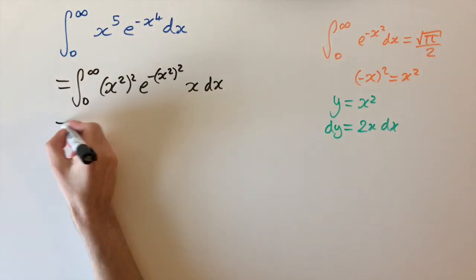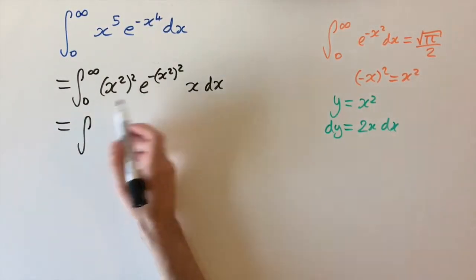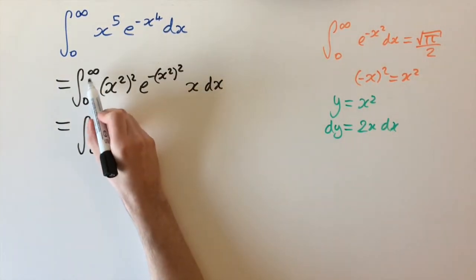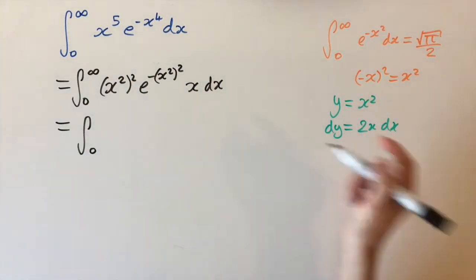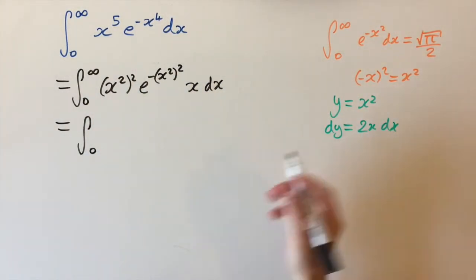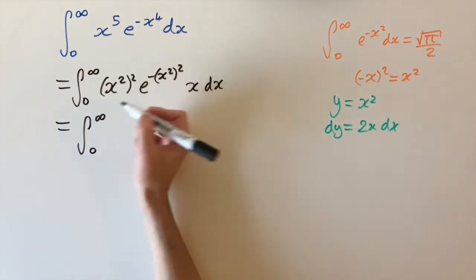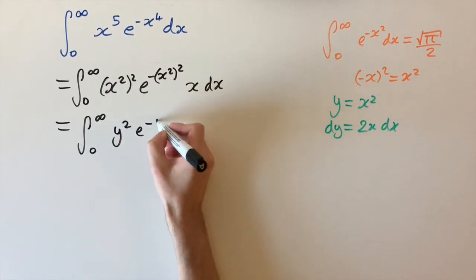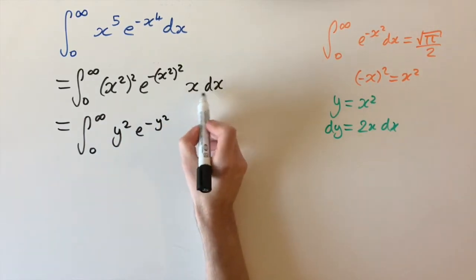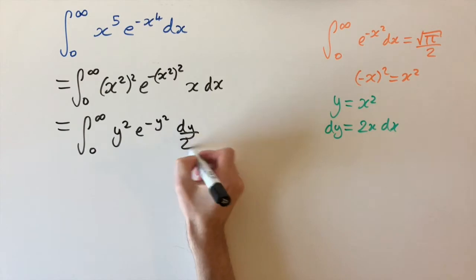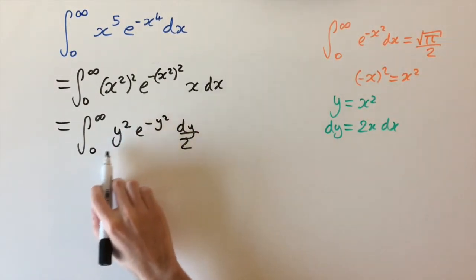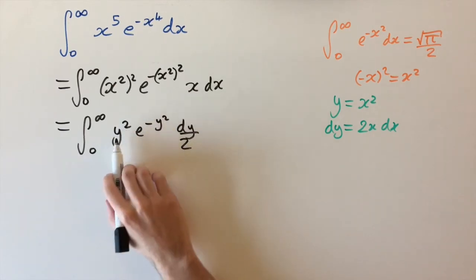Using the substitution, the limits remain the same: x = 0 gives y = 0, and x → ∞ gives y → ∞. Replacing in terms of y, we have y squared times e to the minus y squared, with x dx becoming dy over 2. So we're close to the Gaussian integral, except we have this extra factor of y squared that we need to eliminate.